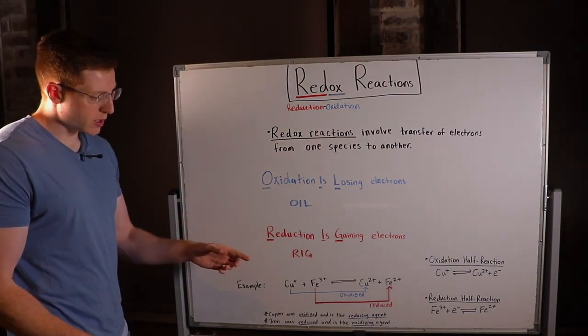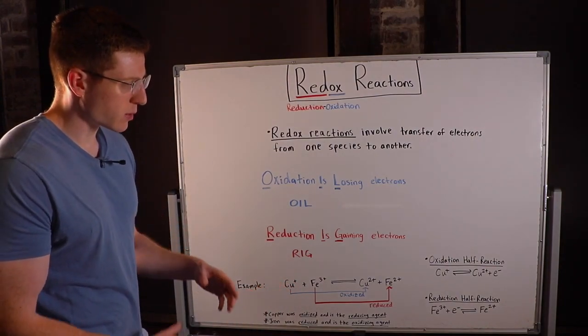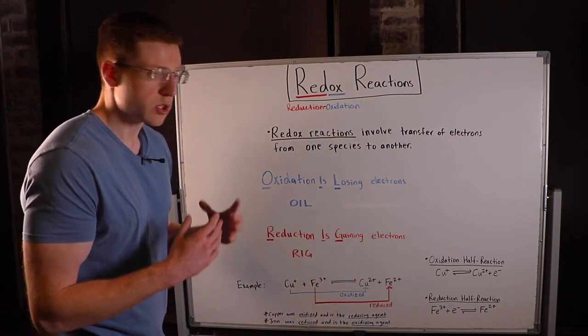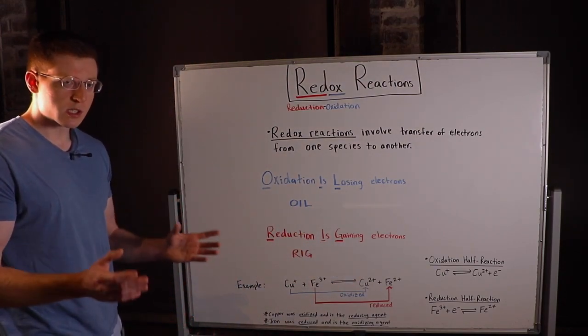Figuring out what was oxidized and reduced in this reaction was very easy because we were able to determine the oxidation numbers of each species directly. But it's not always that straightforward.